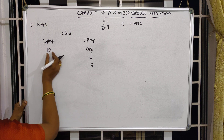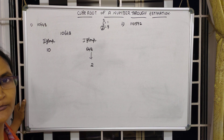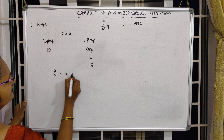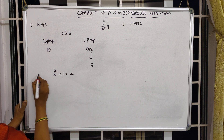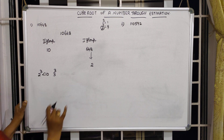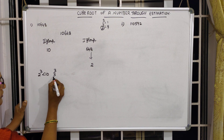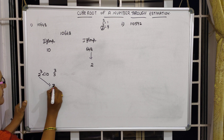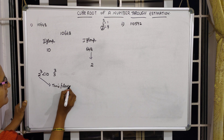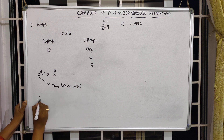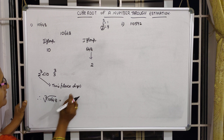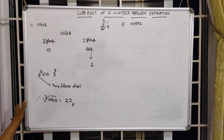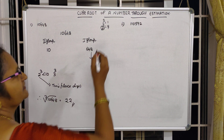Now coming to the second group: the number is 10. We find which two consecutive cube numbers 10 lies between. Two cubed is less than 10, which is less than three cubed. Among those two cube numbers, the smallest is 2, so 2 will come as the tens place digit. Therefore, the cube root of 10648 equals 22.